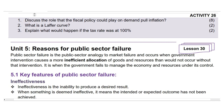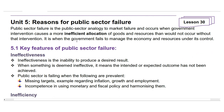Let's get into the lesson for the day, in which we will look at reasons for public sector failure. Public sector failure is the public sector analogy to market failure and occurs when government intervention causes a more inefficient allocation of goods and resources than would occur without that intervention. It is when the government fails to manage the economy and resources under its control.